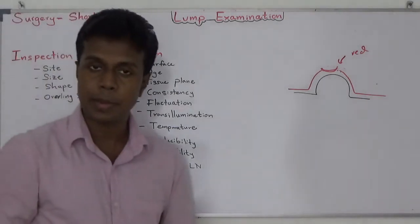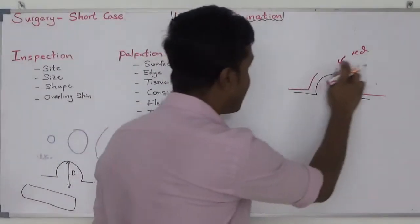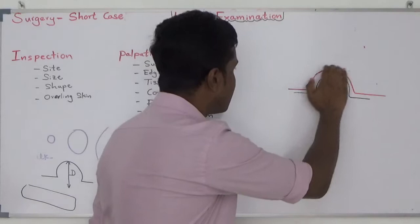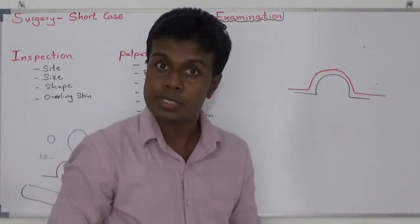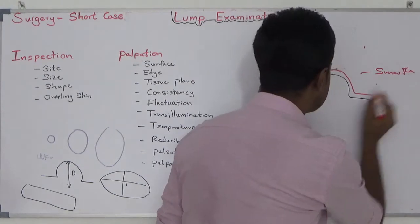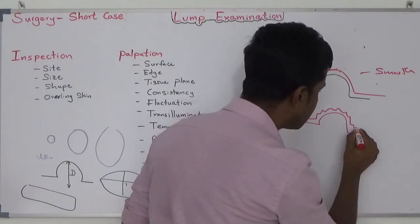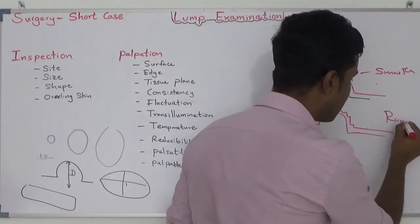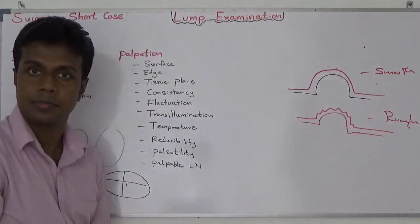Then you move into palpation. Number one: surface. Once you palpate the lump, you can say this lump has a smooth surface, or some lumps have a rough surface. So surface can be smooth or rough when you palpate.